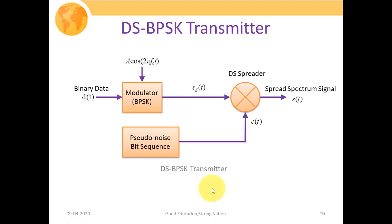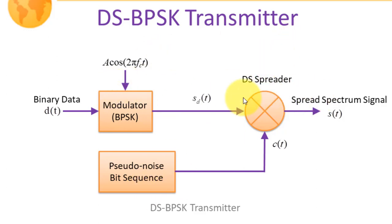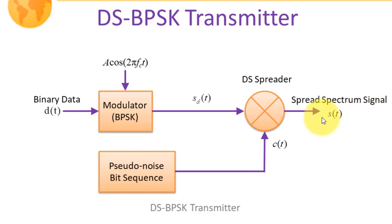Now we discuss the passband direct sequence spread spectrum system using binary phase shift keying. This figure shows the DS-BPSK transmitter. Binary data sequence D(t) passes through a BPSK modulator with carrier A·cos(2πf_c·t), producing the modulated data sequence S_D(t). This BPSK signal then passes through a product multiplier whose second input is C(t), the chipping sequence from a pseudo-noise bit sequence generator. S_D(t) and C(t) are multiplied, expanding the signal bandwidth to produce the spread spectrum signal S(t).